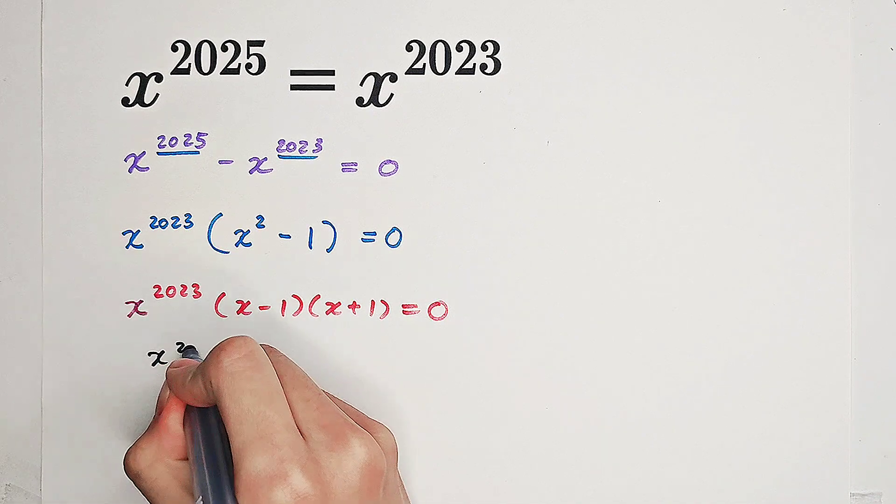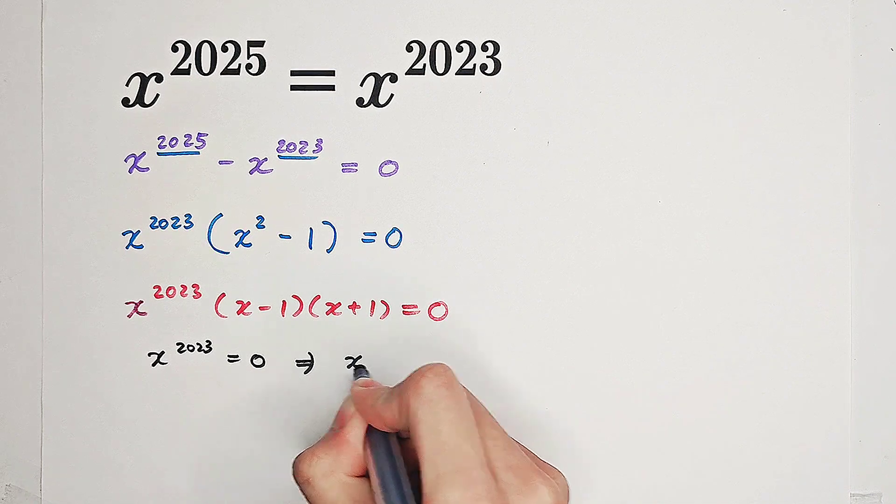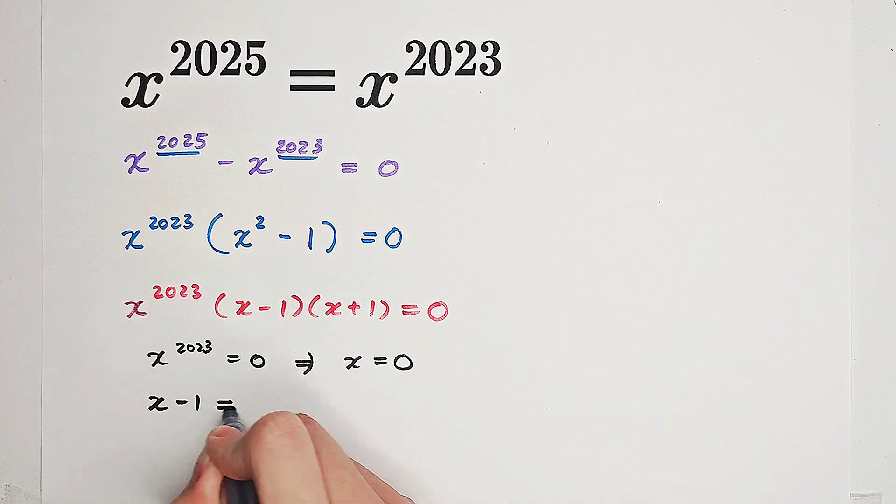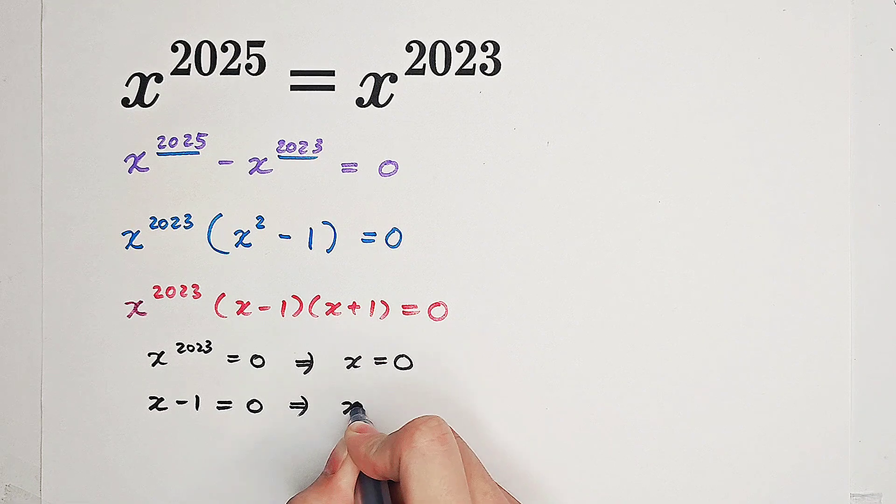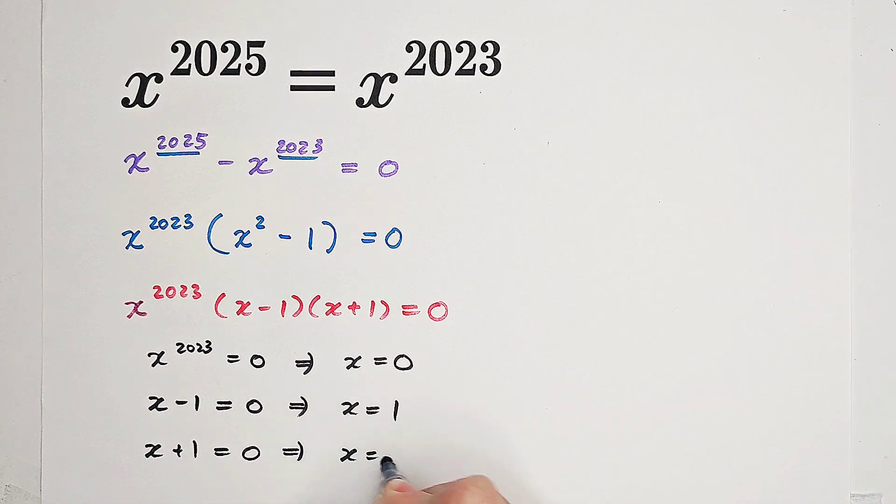First case: if x^2023 = 0, then x = 0. Second case: if x - 1 = 0, then x = 1. Third case: if x + 1 = 0, then x = -1.